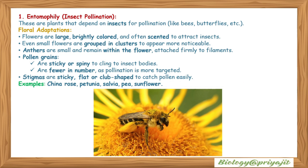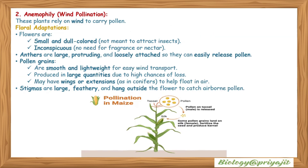Anemophily — wind pollination: these plants rely on wind to carry pollen. Flowers are small and dull-colored with no fragrance or nectar. Anthers are large, protruding, and loosely attached so they can easily release pollen. Pollen grains are smooth and lightweight for easy wind transport, produced in large quantities. They may have wings or extensions, as in conifers, to help float in air. Stigmas are large, feathery, and hang outside the flower to catch airborne pollen.